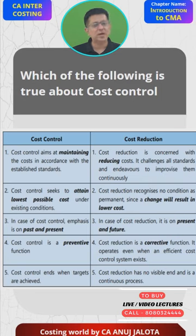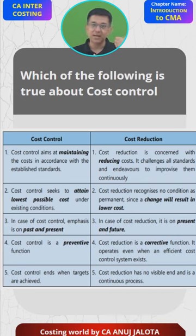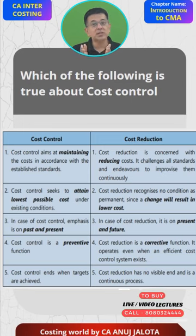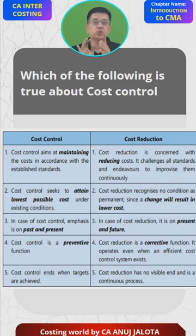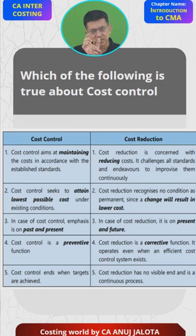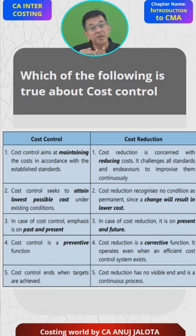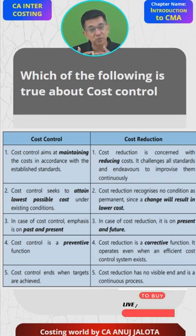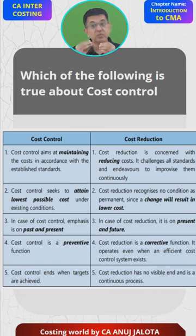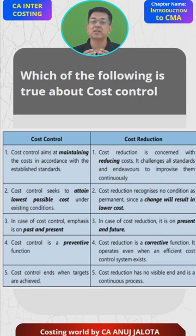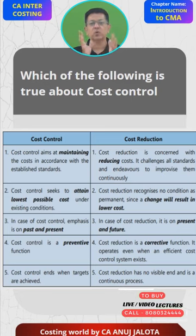Cost control is about past and present — standards are set in the past and in the present we check whether we are conforming to those standards or not. But cost reduction is about the future — we think about how much cost we want to reduce going forward. Cost control is a preventive function — we try to prevent higher cost. Cost reduction is a corrective function — in the future, to increase competitiveness, we reduce cost further.